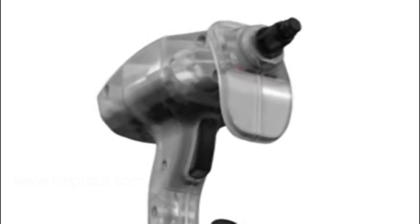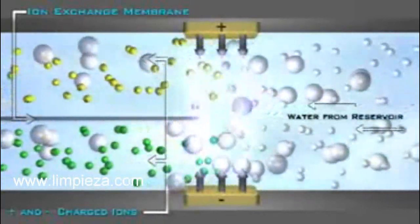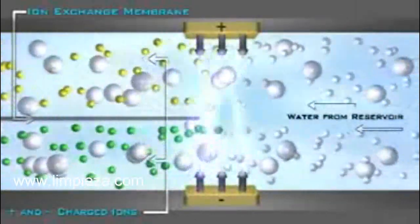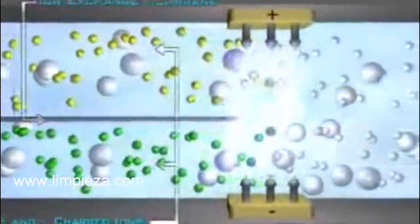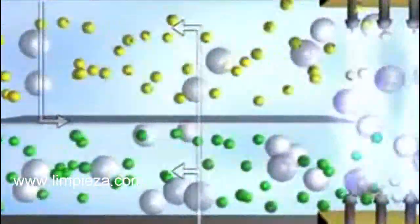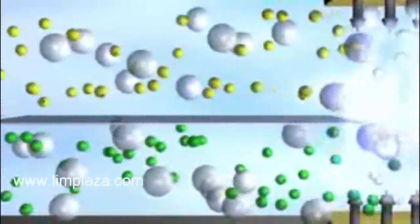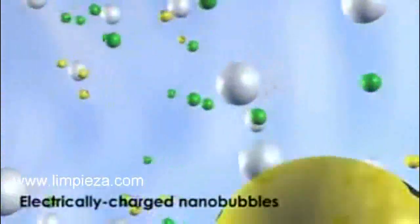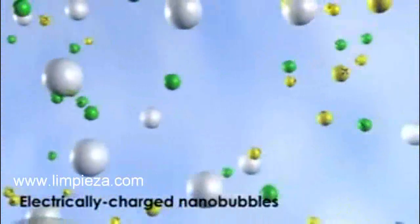Inside the head of the Ionator EXP, the tap water is ionized through advanced physics and electrical engineering. The patented water cell applies an electrical charge to the water as it passes through an ion exchange membrane, creating an oxygen-rich mixture of electrically charged nano-bubbles.